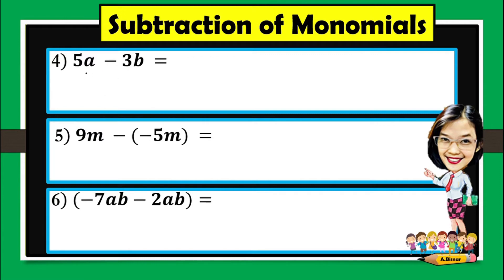For number 4: 5a minus 3b. As you observe, the variables here are not the same, which means they are unlike terms. If the terms are unlike, we cannot subtract them, which means the final answer is still 5a minus 3b.